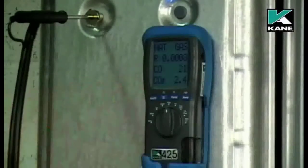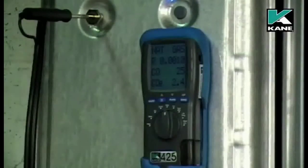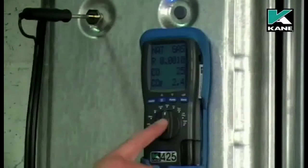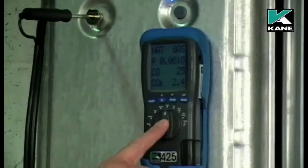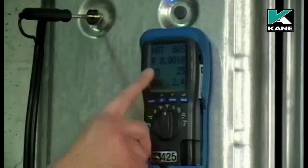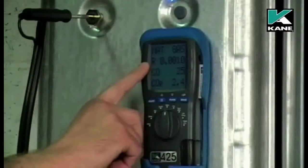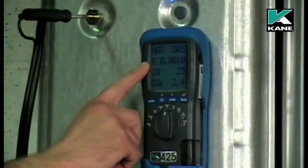It is actually continuously sampling. When the readings have stabilized, typically after a minute or so, with the dial in the ratio position you can check the actual CO2 ratio to four decimal places.